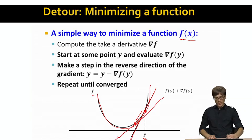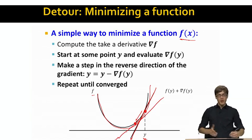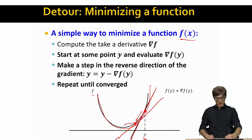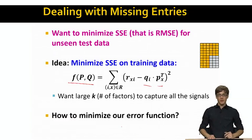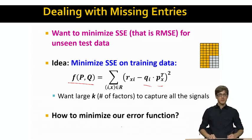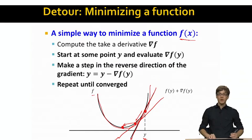In the next step I would re-evaluate the gradient — that's the slope of the line — and again make a small step in the reverse direction of the gradient. I keep doing this until I reach the minimum of the function. This is basically the strategy we'll be using to solve our optimization problem. We already have the equation, and since it is a simple quadratic equation, taking the derivative is very easy, and we can code up our optimization algorithm in about 10 lines of code.